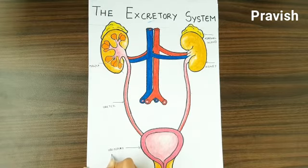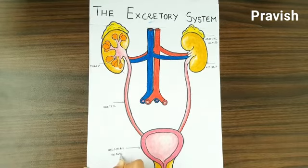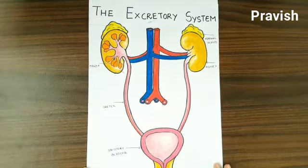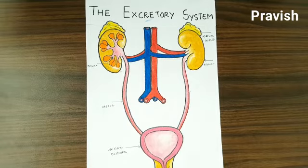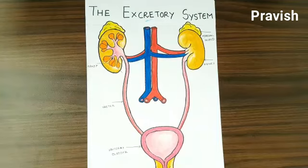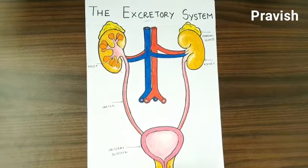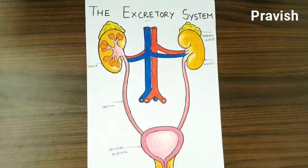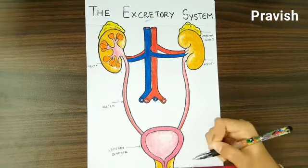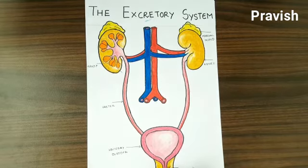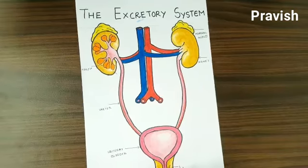So the urine that is produced in the kidneys comes to this urinary bladder and gets temporarily stored. When the bladder gets full it will give an urgent sensation — many times you try to control it, and when it gets too urgent you rush off to the toilet. After the bladder gets full, the urine comes out through this short muscular tube also known as the urethra.